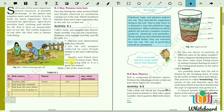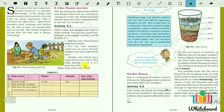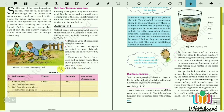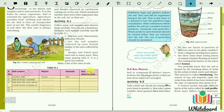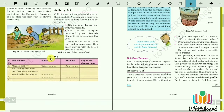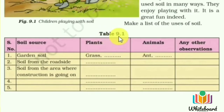Bujo and Pahali have used soil in many ways — they enjoy playing with it. Make a list of the uses of soil. Now let's focus on Table 9.1. Serial numbers 1, 2, 3 are given with soil sources filled in; numbers 4 and 5 are left for you to fill up.